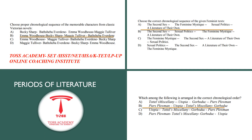In the question papers, one question typically comes from chronological order. To answer these questions effectively, learn the periods of English literature — learn each period, its features, and the associated writers. For example, a conflict between science and faith is a theme of the Victorian age, while a return to nature is characteristic of the Romantic age. Learn one age's features, its writers, and important works to easily handle chronological sequence questions.